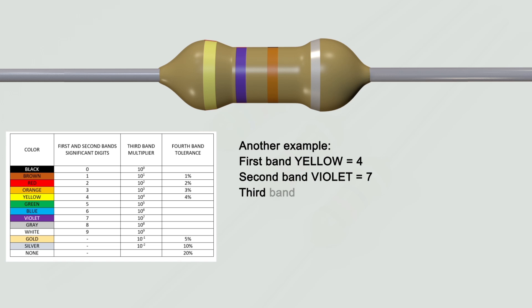Another example. First band yellow equals 4, second band violet equals 7, third band orange equals 10^3 equals 1000. Value is 47 times 1000 equals 47k ohms with 10% tolerance.